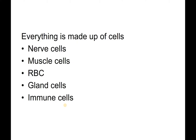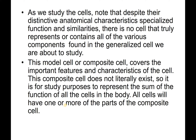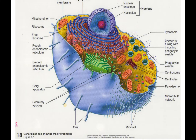Our body is filled with billions and billions of cells. The model we're getting ready to look at is just an all-encompassing model, so not every cell looks exactly like this. What they did is they took all the different cells in the body, grabbed each different component, and compiled them into one model — basically showing all the different things found in all the different cells in our body.